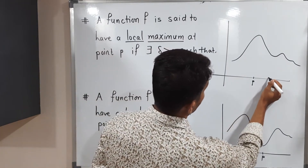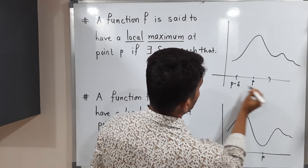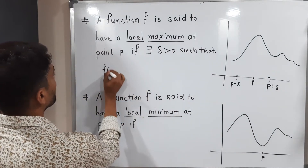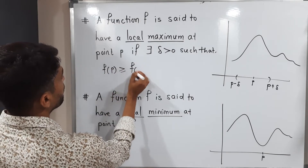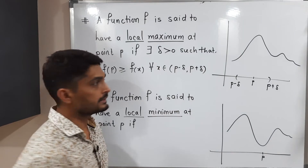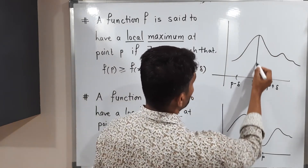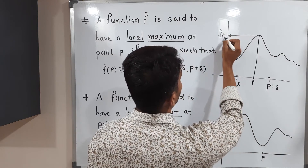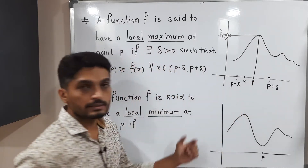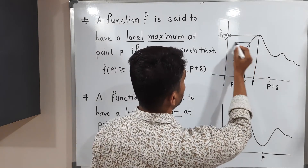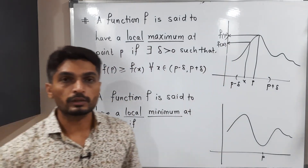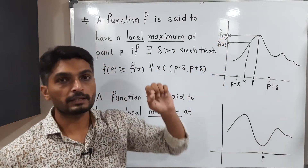We consider the neighborhood of P as (P minus Delta, P plus Delta). In this neighborhood, the function has a maximum value at P, such that F of P is greater than or equal to F of X for all X belonging to (P minus Delta, P plus Delta). Here, point P maps to F of P. If you take any point X in this interval, its image F of X satisfies F of P greater than or equal to F of X. This means in the neighborhood of P, the function has a maximum value at P.